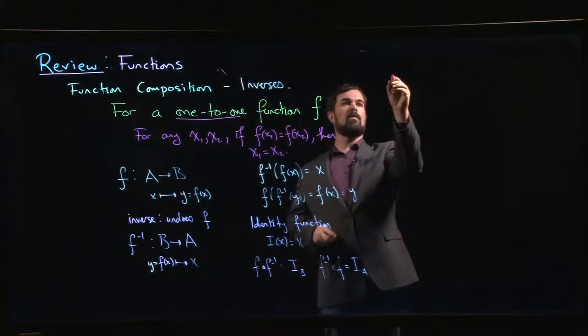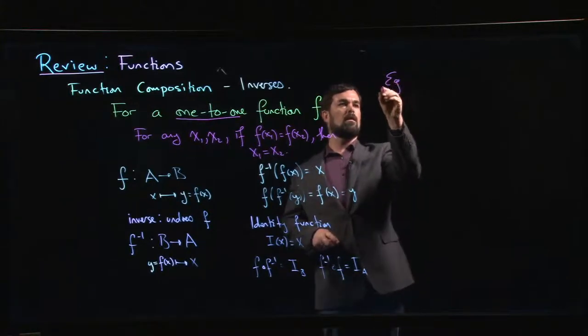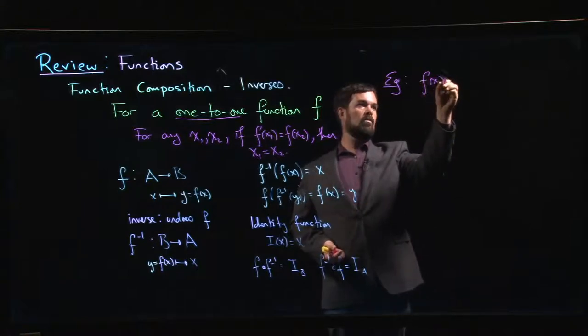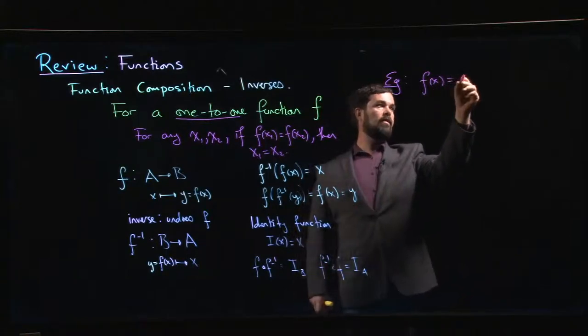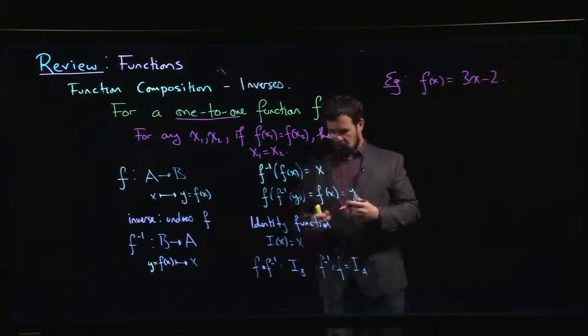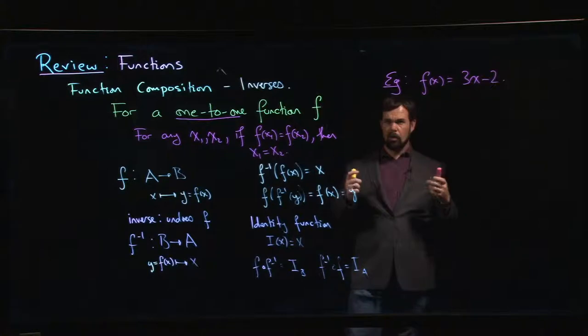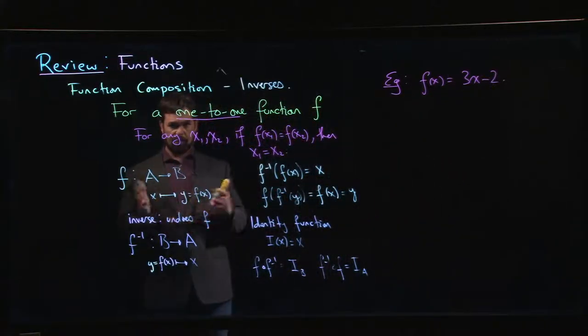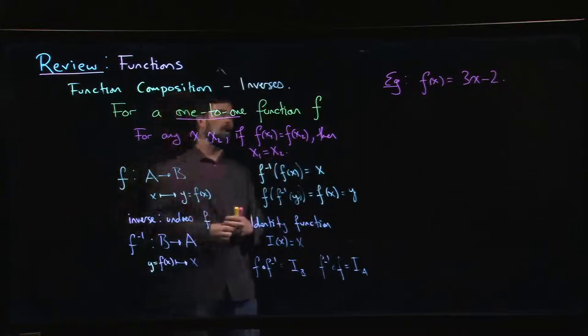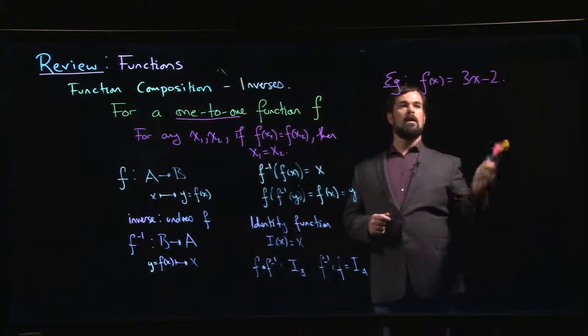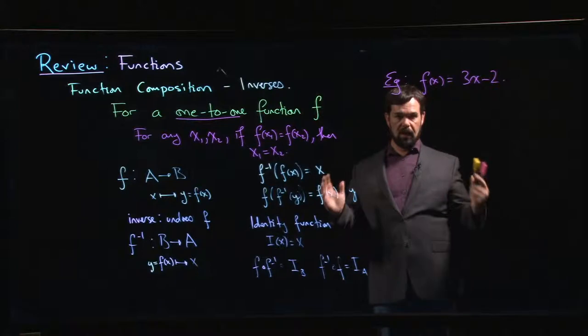So if we do something like, let's say, do something simple like a linear function, 3x minus 2. Now, you can almost work out what the inverse should be if you just think about the function in the sense of it's a rule that tells you how to do something. So what does this function tell you to do? It tells you to take a number, multiply by 3, and then subtract 2.